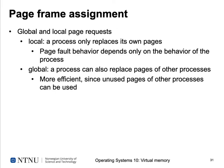For page frame assignment you can use either a global or local strategy. A local strategy means a process only replaces its own pages, so its page fault behavior depends only on its own execution. With global page replacement, a process can request pages of other processes to be evicted — this is usually more efficient since the OS can identify unused pages of other processes and reallocate them.